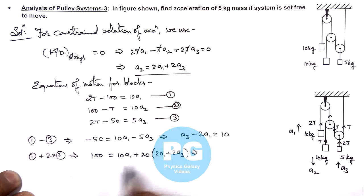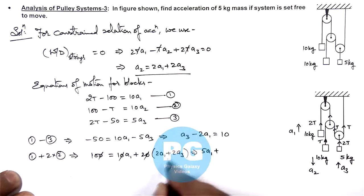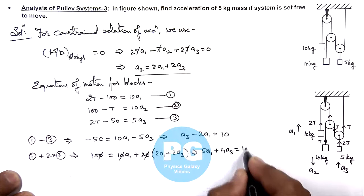And this is resulting as here, this 10 gets cancelled out, and I am having 2 into 2, 4 a1 plus a1, and this 5 a1, plus 2 multiplied by 2, this 4 a3, is equal to 10.